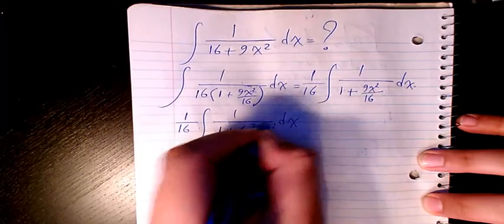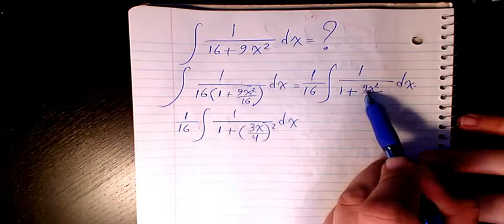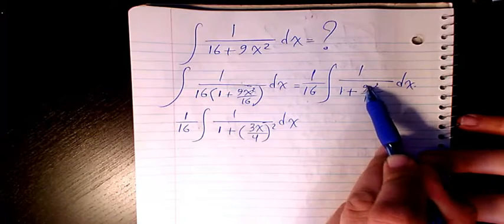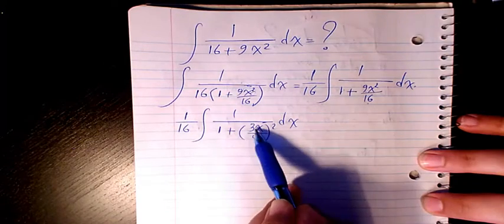as you see here, because we have 9x squared divided by 16, that's exactly the same as 3x over 4 to the power of 2.